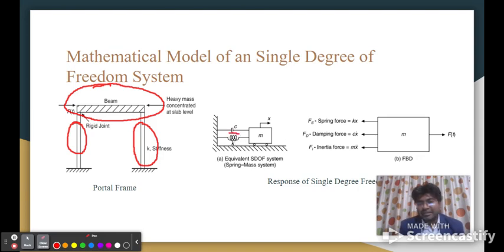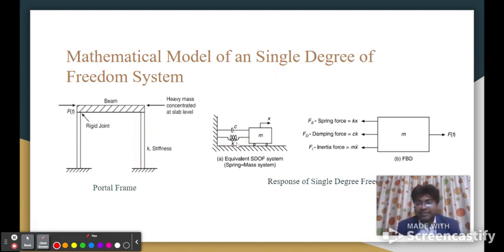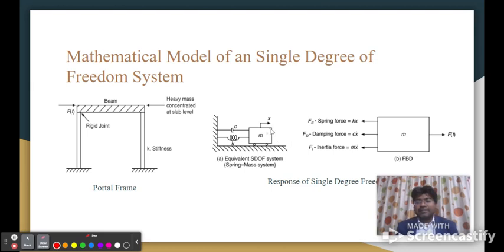See this is spring, which you can assume as the column, and this is the weight at slab level. This damper is the damping coefficient which dampens the vibration. This is the spring-mass system of a structure.